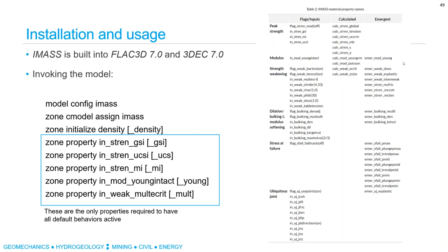Does IMAS change or degrade the rock modulus as the material deforms after peak strength? Yes — it does as a function of VSI. But the VSI accumulated in the zone between peak strength and post-peak strength envelope is very minimal, so it doesn't make a meaningful difference in module size. The accumulation of VSI mostly happens after the post-peak strength envelope.